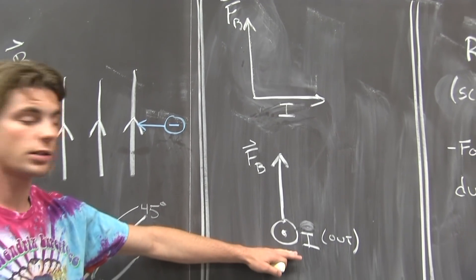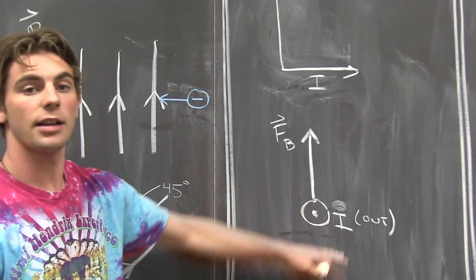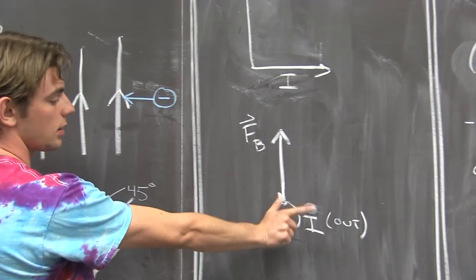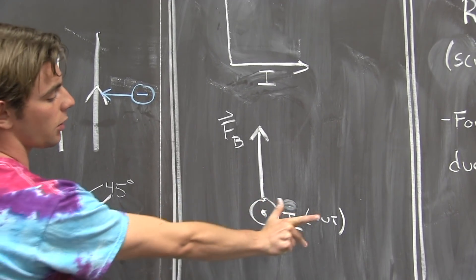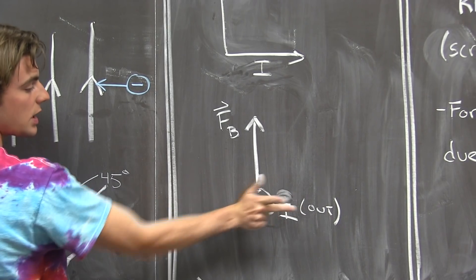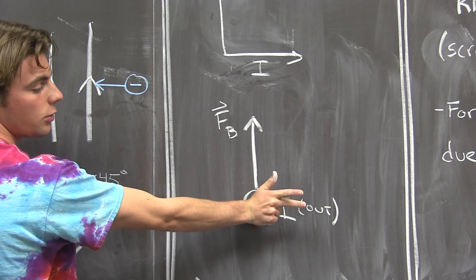Now, for this configuration, the current is coming out of the page, that is our index finger. Our resultant force is our thumb going up, and so b must be pointing to my right.